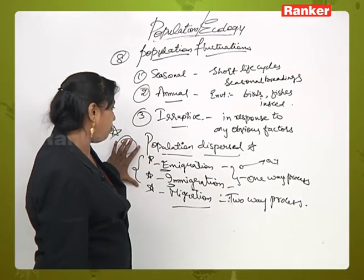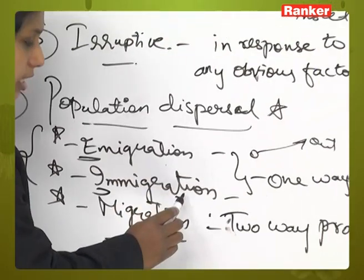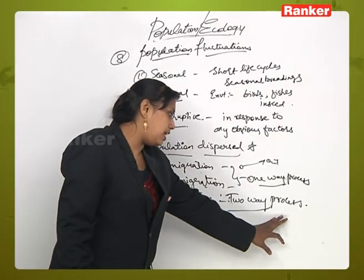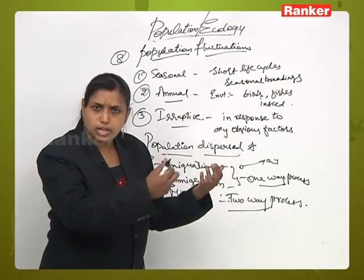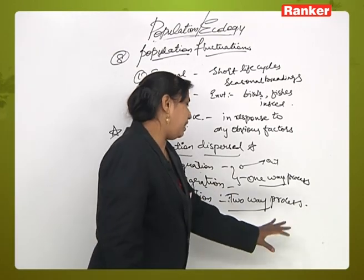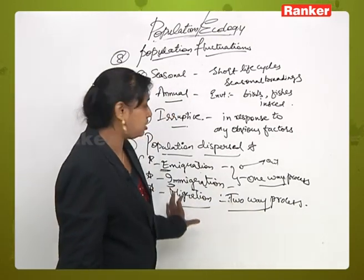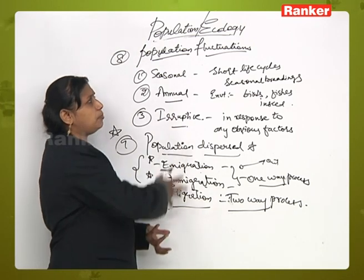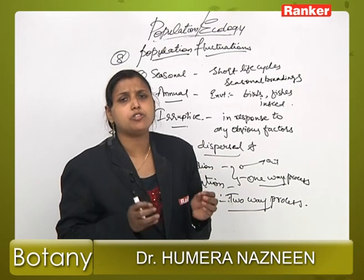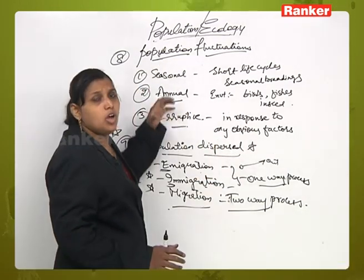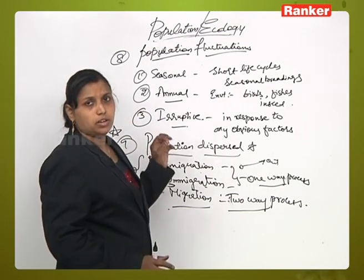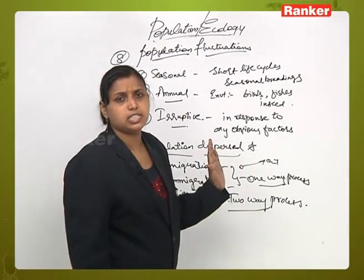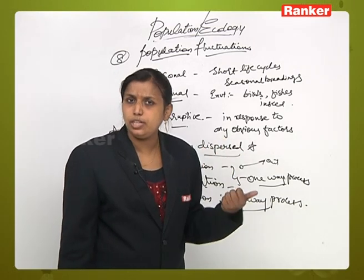These are the basic three types of population dispersal: emigration and immigration are one-way processes; migration is a two-way process where at a particular periodic departure the individual leaves and after a certain time comes back to its original population, mostly seen in insects, birds, and reptiles. These are the characteristics of a population — characteristics one to nine — and on the basis of these we can calculate or estimate the population and study the population ecology of particular individuals in a particular area.